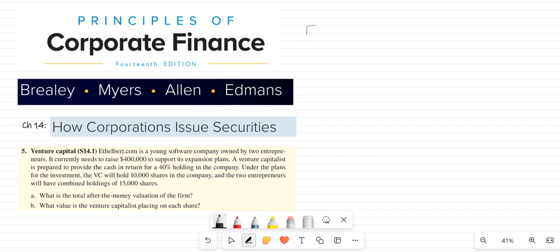Their expansion plan requires $400,000. A venture capitalist is prepared to provide the cash in return for a 40% holding in the company. Under the plan for investment, the venture capitalist will hold 10,000 shares.